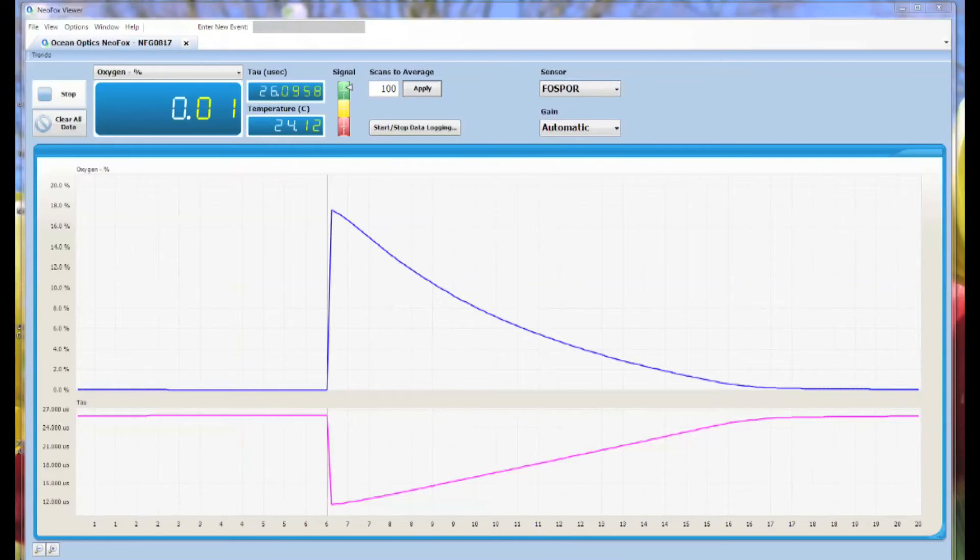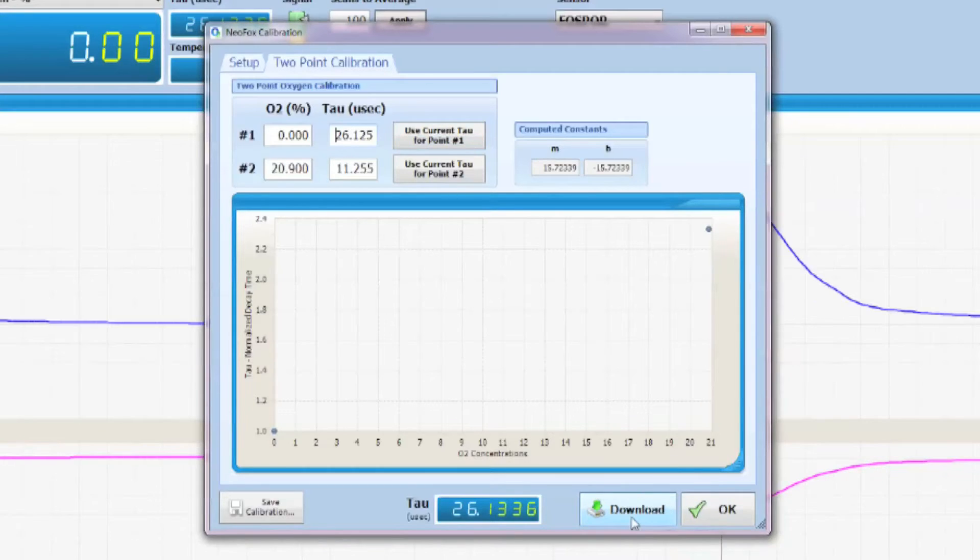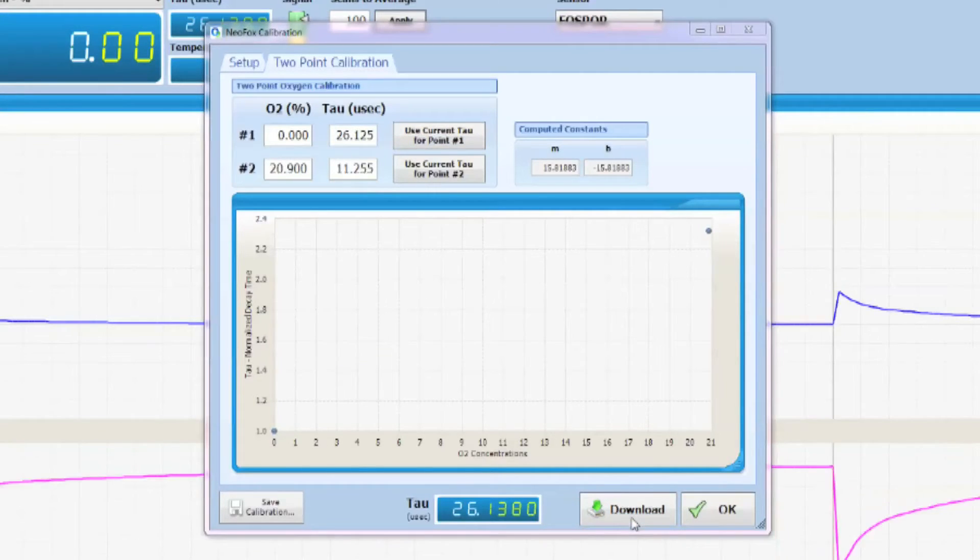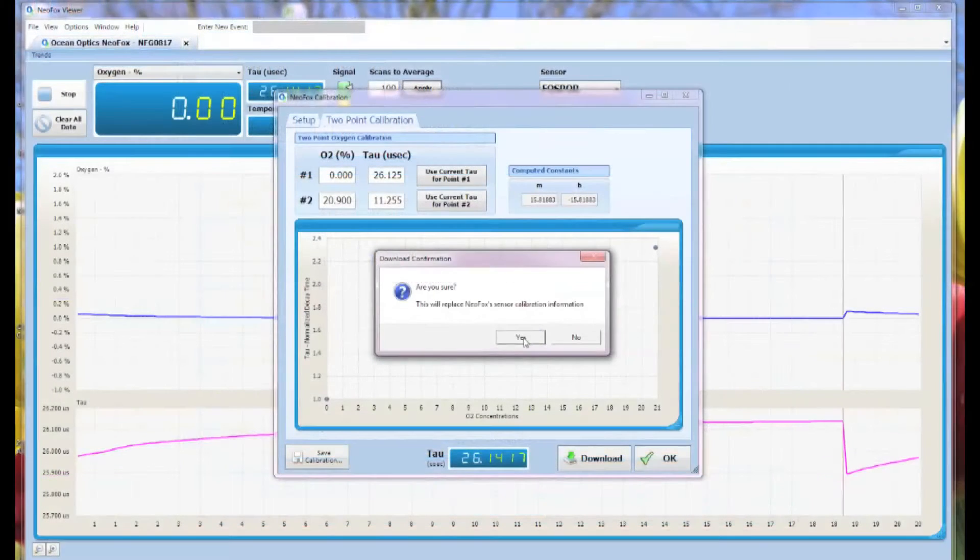Once you see your signal stabilize, you'll click use current tau for point one. Once you've got your two calibration points, you can click download in the lower right-hand corner. There will be a confirmation box asking if you're sure you want to do this because it will erase some of the presets from the factory. Click yes to continue.